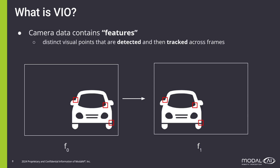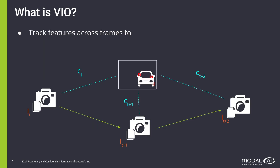Camera data contains features which we can track from frame to frame. In frame 0, we see the car is on the right side with the red squares being our features, and then in frame 1, the car moves to the left and the features move left with the car. So what we can do is track features from frame to frame, look at how those features move, and combine that with our IMU data, and input them into the VIO algorithm.